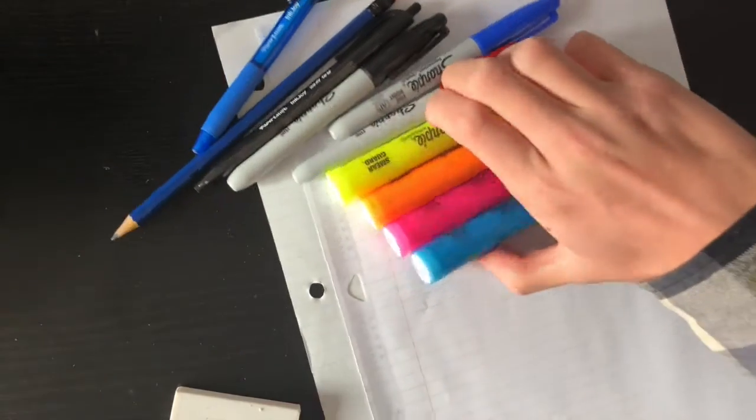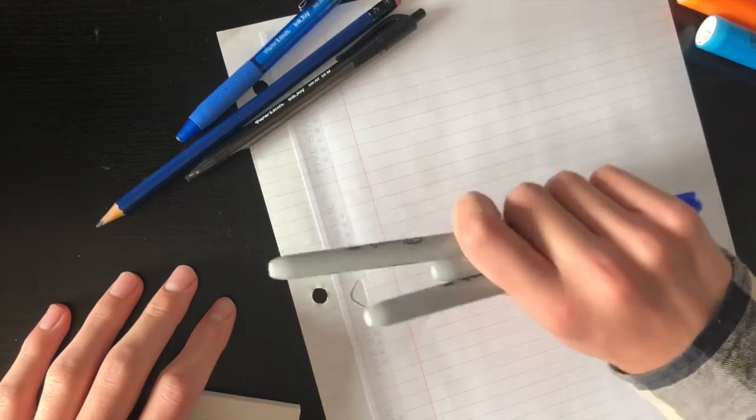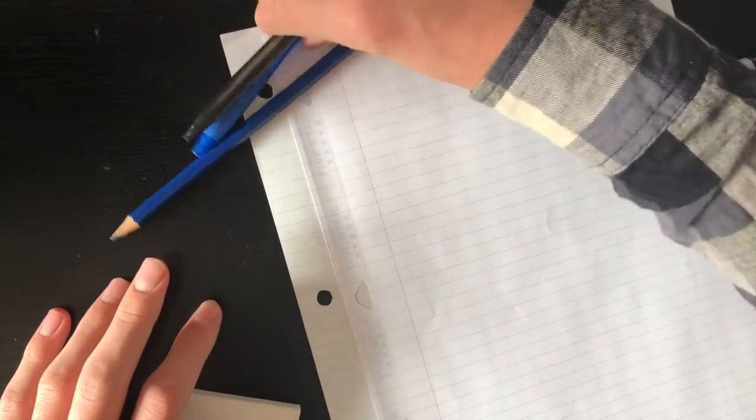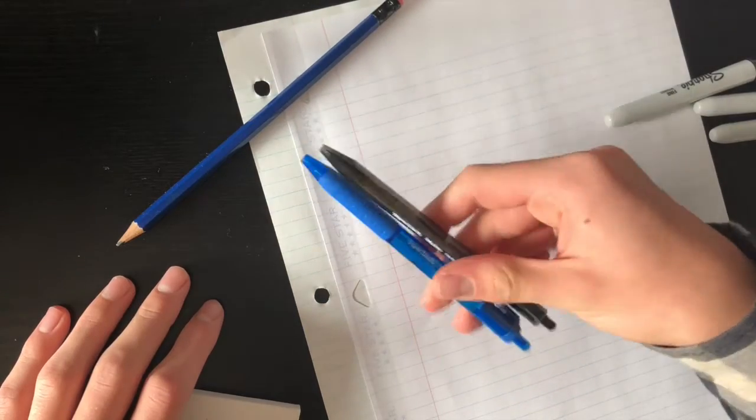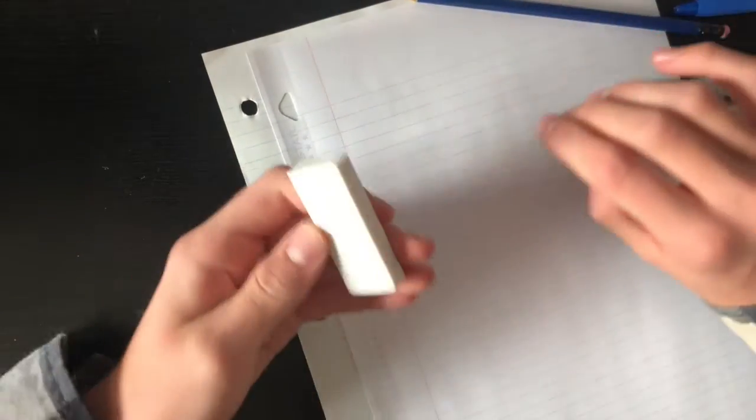So I'll grab these highlighters, these Sharpies that I got from the dollar store. They did dry out, but now they're better. And then these two paper mate pens. They're different models, but they still are good. And a pencil and a big studio eraser that I ripped the thing off of.